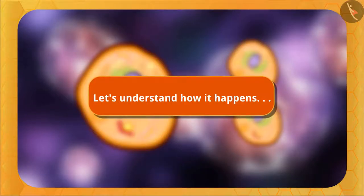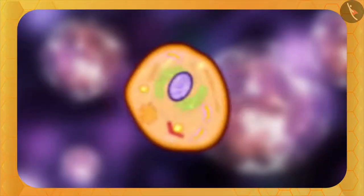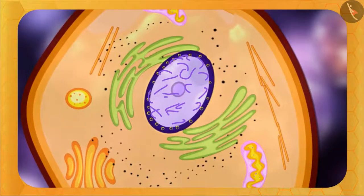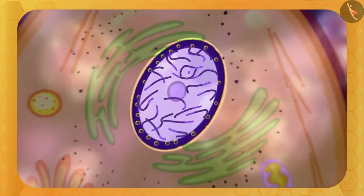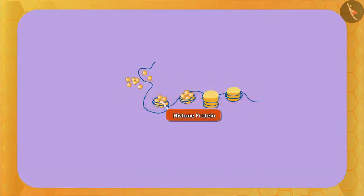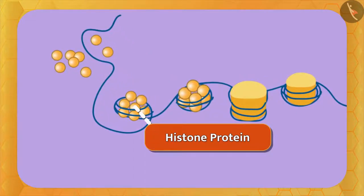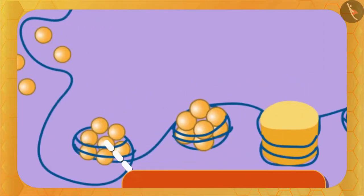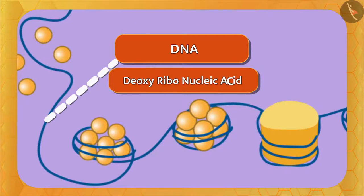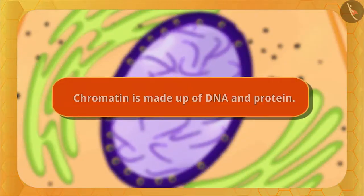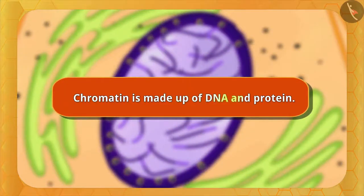Inside the nucleus you can see thread-like structures called chromatin. Looking closely at this thread-like structure, it forms a coil. The dots in the middle are a protein called histone protein. The structure of this thread is called DNA — its full form is deoxyribonucleic acid. So chromatin is made up of DNA and protein.